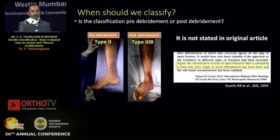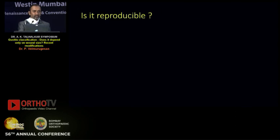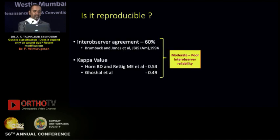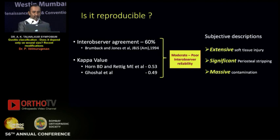It is not uncommon to classify a wound as type 2 pre-debridement and have it become type 3 after debridement. Gustilo did not describe when to classify the fracture in his initial publication. However, in a letter to the editor in 1995, he emphasized that grading is only provisional until debridement has been completed. The classification is used for communication between clinicians and for educational purposes, but analysis by various authors has found only moderate to poor inter-observer reliability, likely due to subjective descriptors such as 'extensive soft tissue injury,' 'significant periosteal stripping,' and 'massive contamination.'